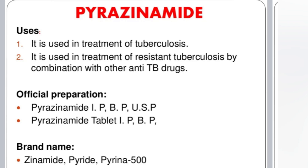Pyrazinamide is used in the treatment of tuberculosis and resistant tuberculosis by combinations with other anti-tuberculosis drugs. Official preparation is pyrazinamide tablet form. Brand names include Zinamide, Pyreid, and Pyrena 500.